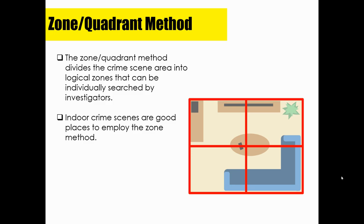The final type of search method is the zone method, also known as the quadrant method. This divides the crime scene area into logical zones that can be individually searched by investigators. As shown in the picture, the crime scene is divided into four quadrants, and four individual investigators are each assigned one quadrant to search. Indoor crime scenes are good places to employ the zone method.